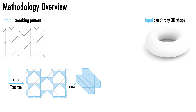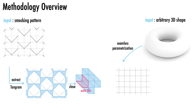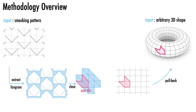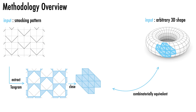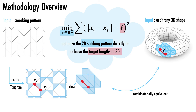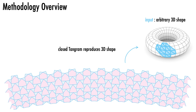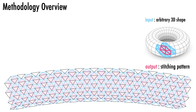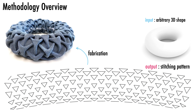Specifically, we first extract the tangram graph from the smocking pattern and compute its closed configuration to obtain a unit tile. Based on its symmetry, we compute a seamless parameterization for the input shape that can exhibit singularities. The tiled grid is pulled back to obtain a semi-regular mesh that approximates the input shape. We proceed to optimize the original 2D geometry of the tangram in its open configuration to match target distances from the new mesh. As a result, the tangram is deformed such that it can reproduce the target shape in its closed configuration. Finally, we extract the stitching pattern and use it as a reference for fabrication.